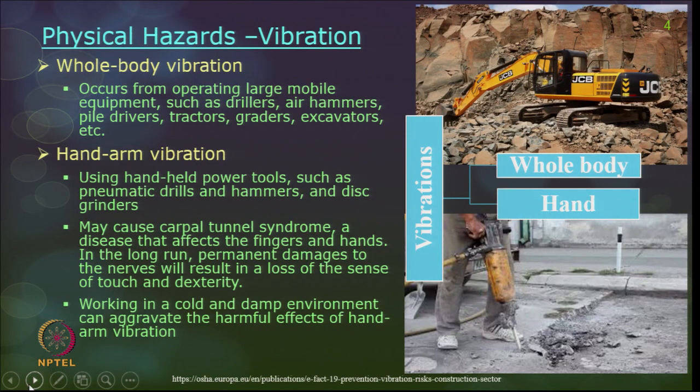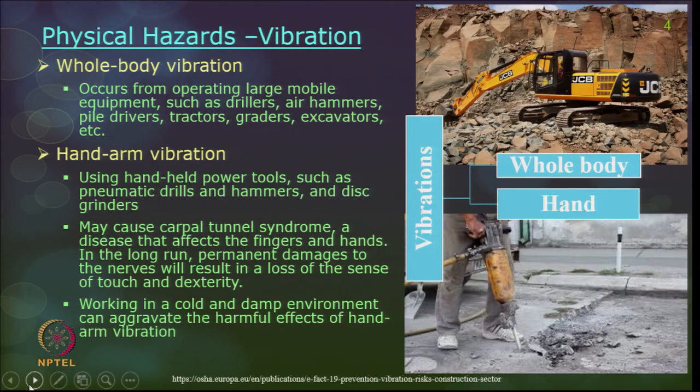Physical hazards include whole body vibration and hand-arm vibration. Whole body vibration occurs primarily during excavation and loading work. Hand-arm vibration occurs primarily when using vibrators to consolidate concrete into reinforcements. Vibration affects the human nervous system. Whole body vibration occurs in large mobile equipment such as excavators, drillers, air hammers, pile drivers, tractors, and graders. Hand-arm vibration from hand-held power tools such as pneumatic drills and hammers can cause carpal tunnel syndrome, affecting the fingers and hands, and in the long run may lead to loss of sensation and touch.